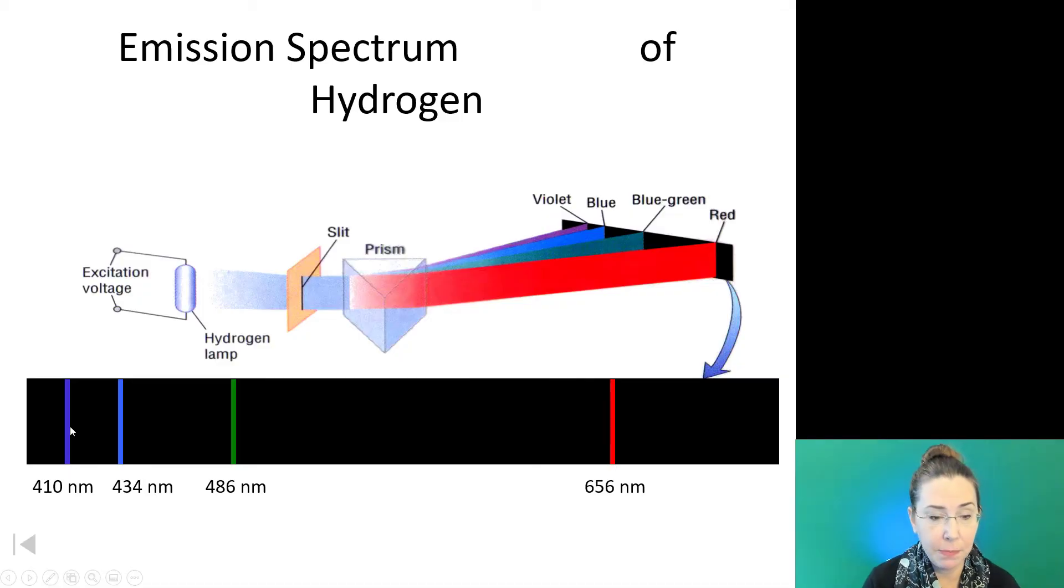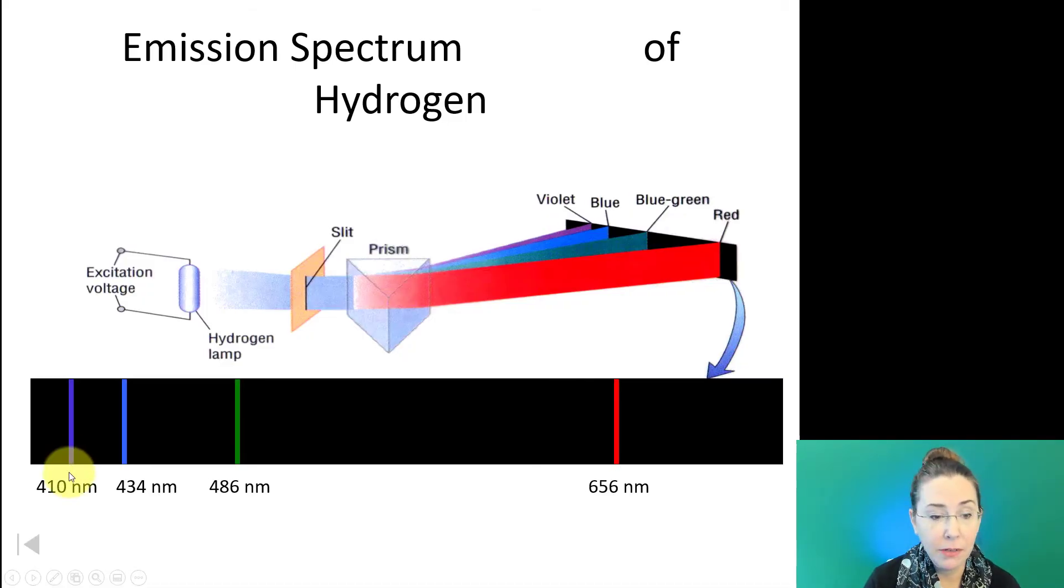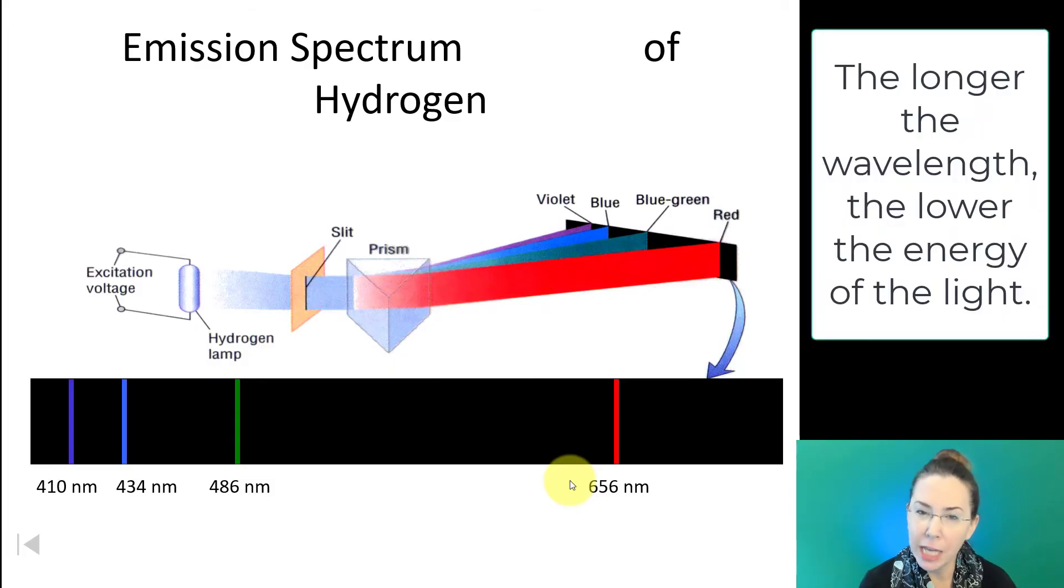Here in hydrogen, for example, we have one band at about 410 nanometers. That's the wavelength of light. Another one at 434 nanometers, a third in the green range at 486 nanometers, and finally one in red at 656 nanometers. Remember, the longer the wavelengths are, the lower the energy is in that color of light. That's why the red range has a larger number because the energy is lower as the wavelengths get longer.